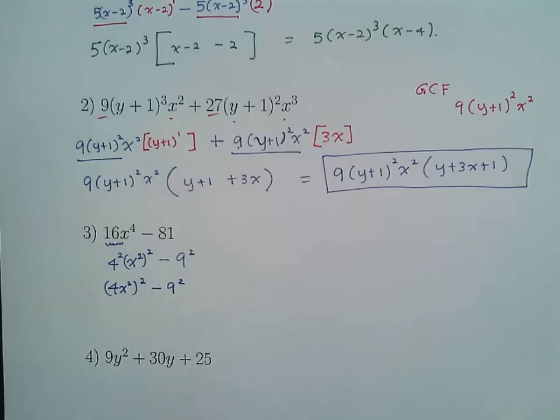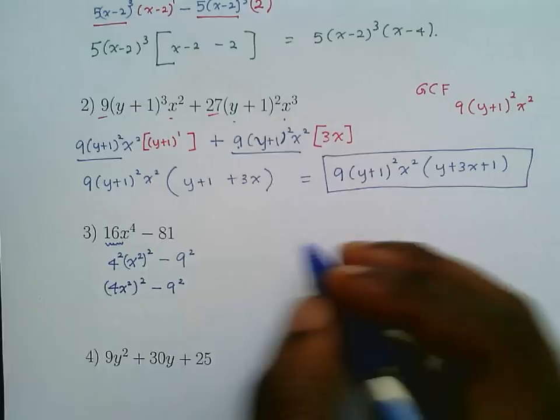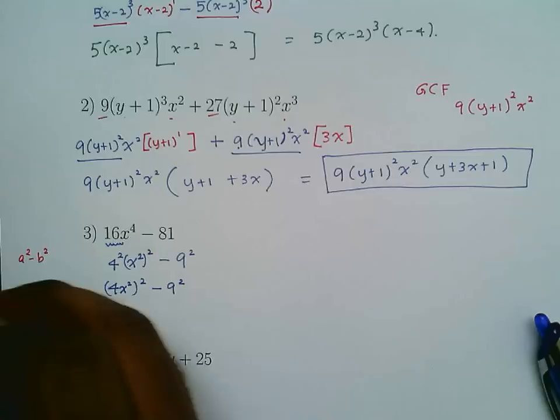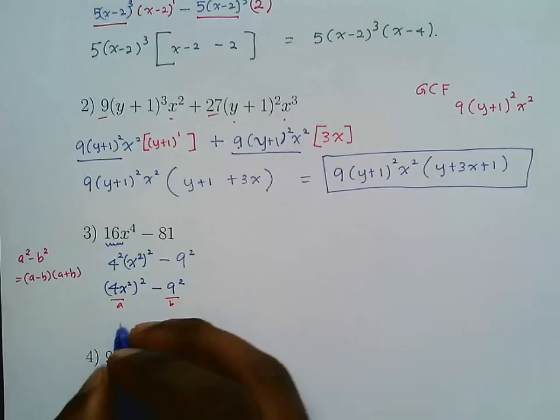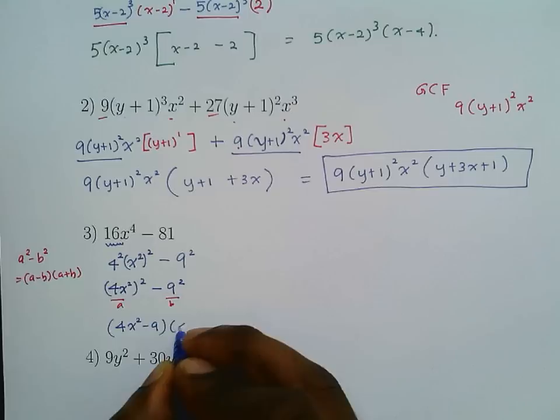Now we have a² - b² form, which factors as (a - b)(a + b). With a = 4x² and b = 9, we get (4x² - 9)(4x² + 9).